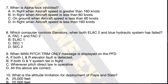So let's try and solve the question: when is alpha lock inhibited? The alpha lock feature is designed to prevent the aircraft from stalling in flight. That automatically eliminates options A, B, and D — all of which say 'in flight' — because you want the feature available in flight. The only option remaining is C, on ground. On ground, when the aircraft speed is less than 60 knots, alpha lock is inhibited — meaning the protection is not available.